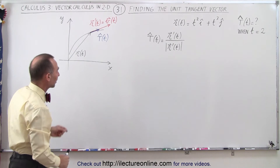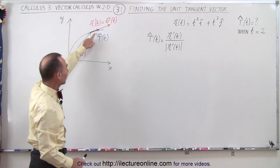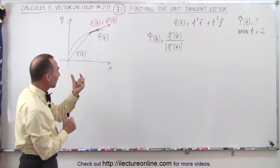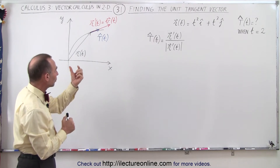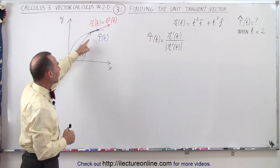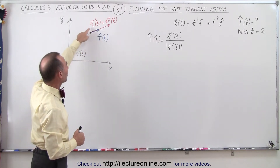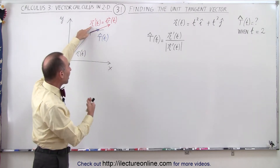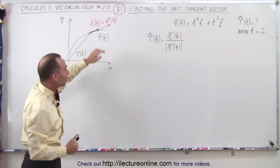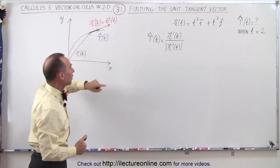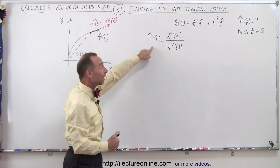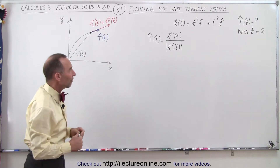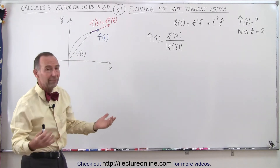Here would then be the unit tangent vector, and notice that it's in the same direction as the derivative of the position vector, which could represent velocity if the parametric variable was time. So we're looking for a vector tangent to the curve with length equal to 1. To do that, you take the r prime vector — the derivative of the position vector — divided by its magnitude. That's how the unit tangent vector is defined.